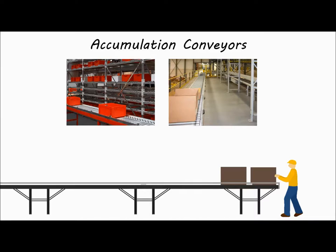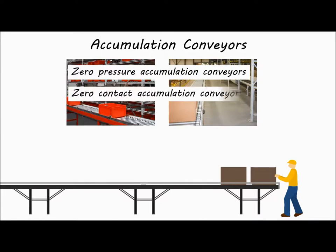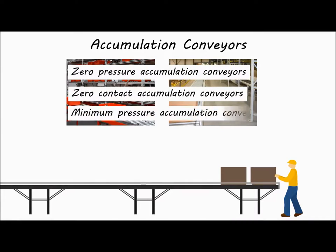There are three types of accumulation conveyors: zero pressure, zero contact, and minimum pressure.